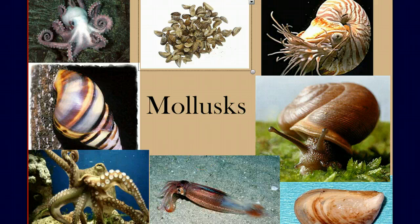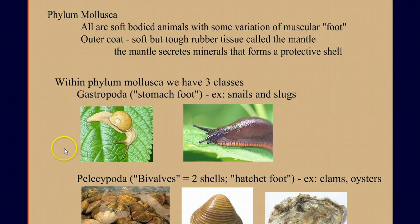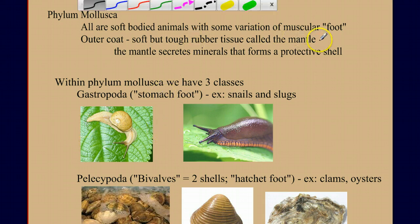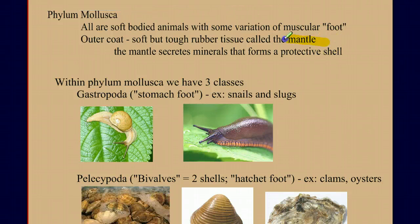Let's start with some general terms about the phylum Mollusca. All mollusks are soft-bodied animals with some variation of a muscular foot. They all have an outer coat called a mantle, and the mantle secretes minerals that form a protective shell.